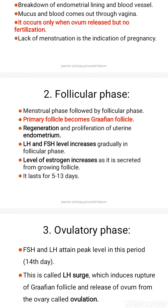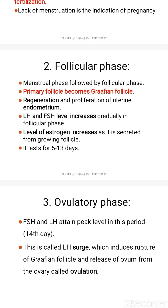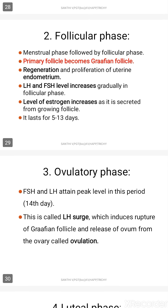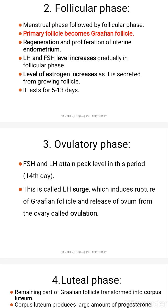The second phase is called the follicular phase. The menstrual phase is followed by the follicular phase. Here the primary follicle becomes the Graafian follicle, and regeneration and proliferation of the uterine endometrium occurs. LH (luteinizing hormone) and FSH (follicle stimulating hormone) levels increase in the follicular phase, meaning development of the follicle occurs — that is why it is called the follicular phase.